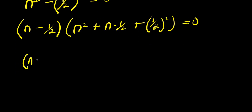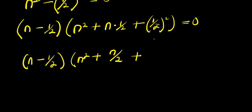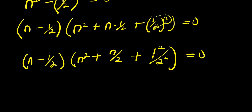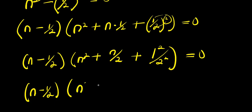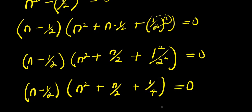From here, n minus 1 over 2, times n squared plus n over 2, plus — making sure each term is raised to the power of 2 — 1 squared divided by 2 squared, equals 0. So that gives us n minus 1 over 2, times n squared plus n over 2, plus 1 over 4, equals 0. Since 1 squared is 1 and 2 squared is 4.